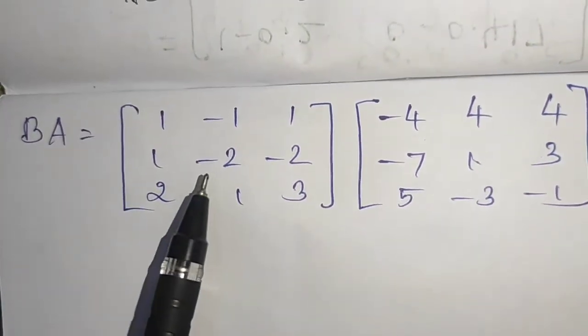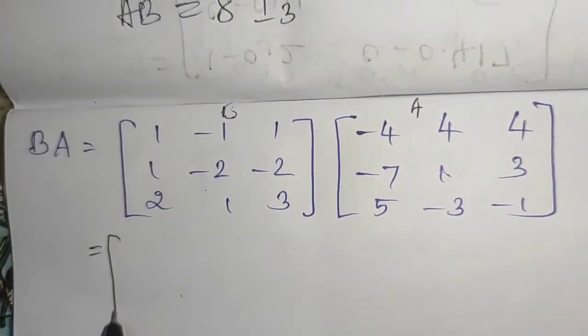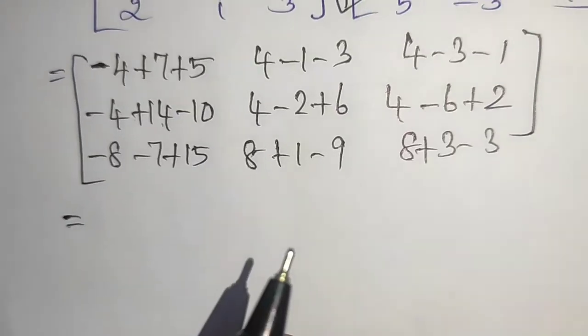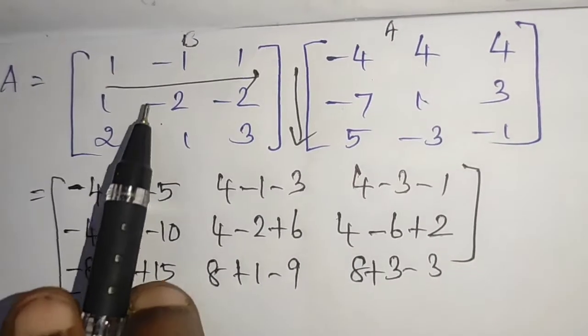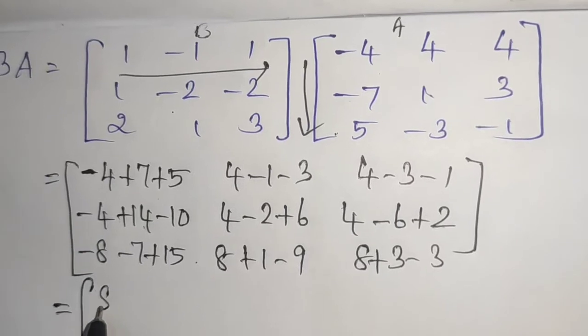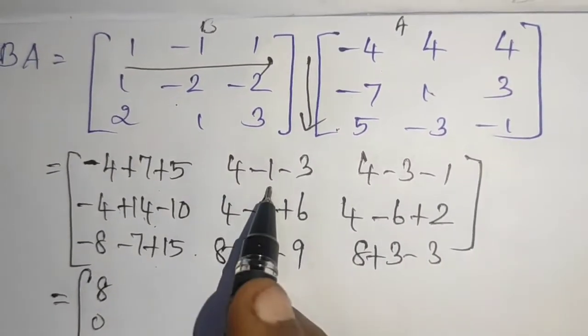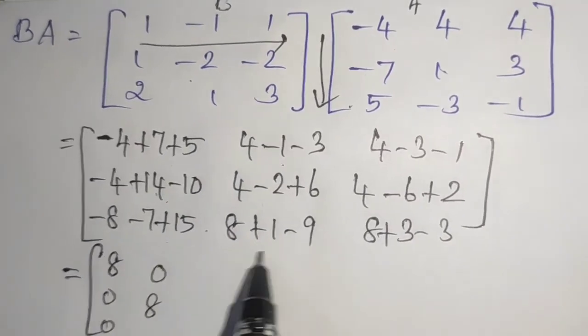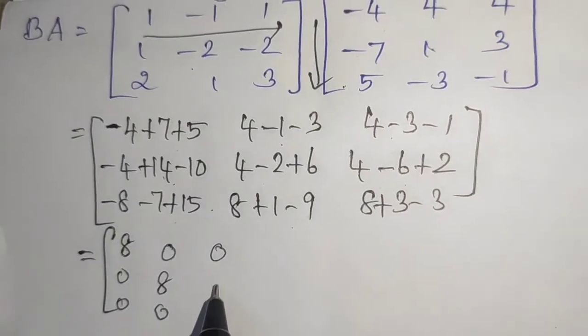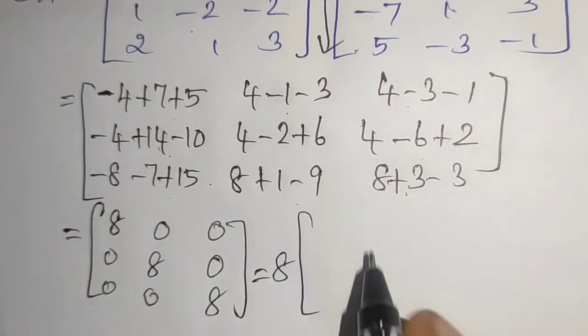Now BA. So BA, first B then A. Multiply these matrices, row into column. 12 minus 4 is 8. 14 minus 14 is 0. 15 minus 15 is 0. 4 minus 4 is 0. 10 minus 2 is 8. 9 minus 9 is 0. 4 minus 4 is 0. 6 minus 6 is 0. 3 plus 3 plus 3 minus 1 is 8.